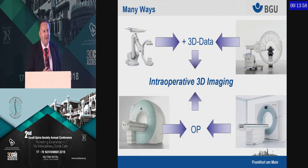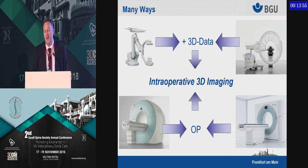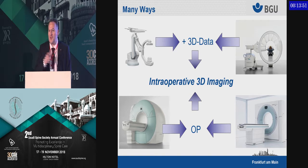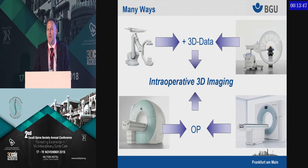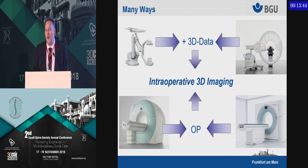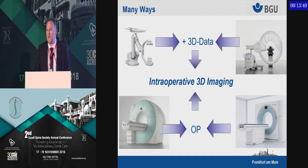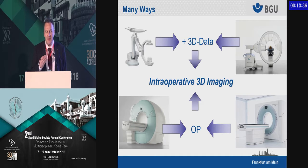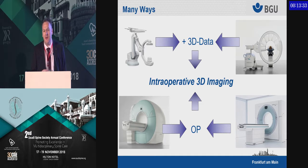How do you get your 3D imaging? It can be predominantly achieved by fluoroscopy, like 3D fluoroscopy, or by an MRI scanner or a CT scanner intraoperatively. The MRI scanner is not really helpful because we have a lot of metal instruments and metal implants, so an MRI scanner in spine surgery is typically not helpful.